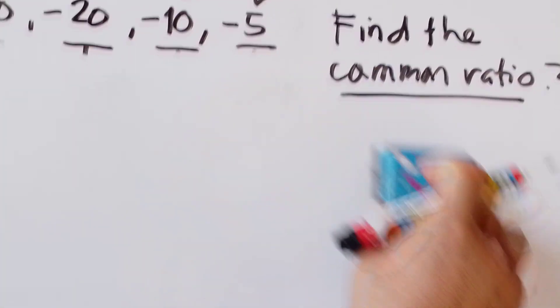Let us verify: a1 is 2, times the common ratio 3 gives us 6 — correct. a sub 3: 6 times r equals 18 — correct. And 18 times r, which is 3, gives 54 — correct. So for number 1, r equals 3 is confirmed. Now let us go to number 2, same question: find the common ratio.